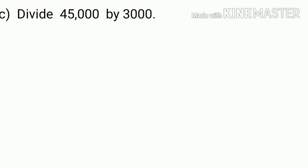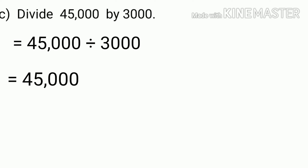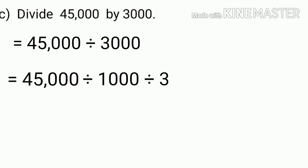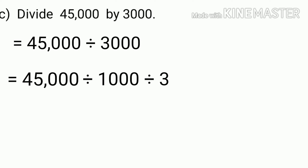Now, let's solve this example: divide 45,000 by 3,000. Here, we can rewrite this by splitting 3,000 into 1,000 and 3. Because 45,000 divided by 1,000 divided by 3 is the same as 45,000 divided by 3,000. Now, in order to find the quotient of 45,000 and 3,000, we can first divide 45,000 by 1,000. When a number is divided by 1,000, we can get the quotient by removing three zeros from the end of the number. After dividing 45,000 by 1,000, we get 45 as the quotient, because we have removed three zeros from 45,000.